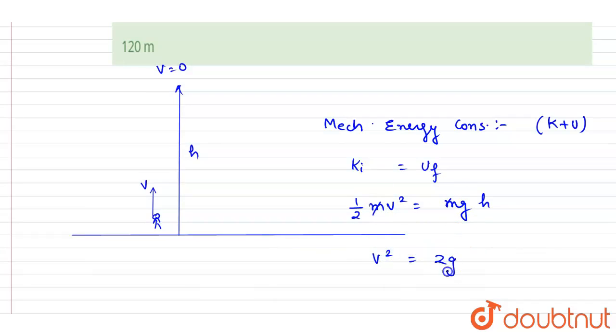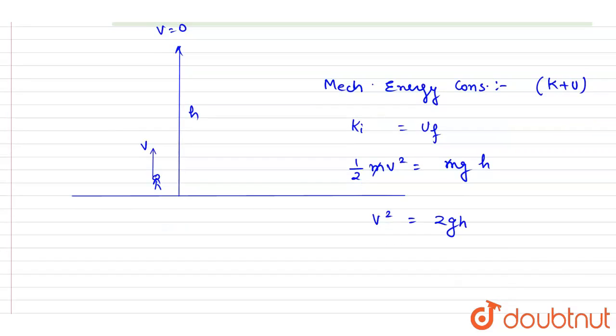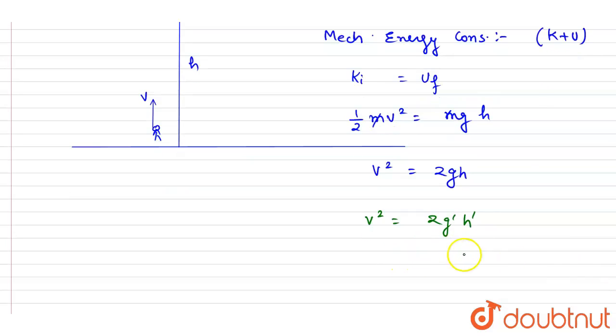You can cancel out the mass, so basically v² will remain the same and h will change. In the second case, the gravitational acceleration will change. For the second case, v² equals g' h'. Velocity will remain the same; gravitational acceleration and maximum height will change.